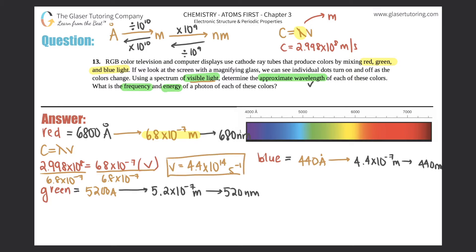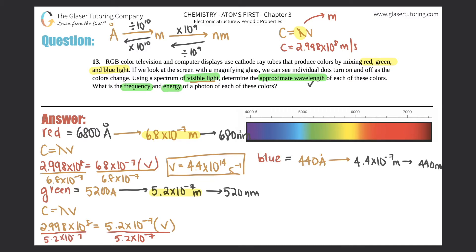For green, same formula: c = λν. So 2.998×10⁸ = 5.2×10⁻⁷ × ν. Dividing both sides by 5.2×10⁻⁷, frequency equals 2.998×10⁸ ÷ 5.2×10⁻⁷, which gives us 5.8 times 10 to the 14th cycles per second, or hertz.